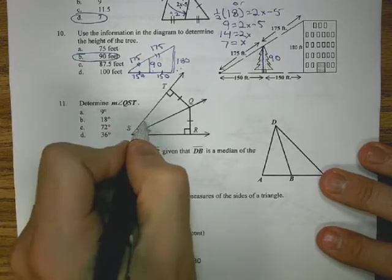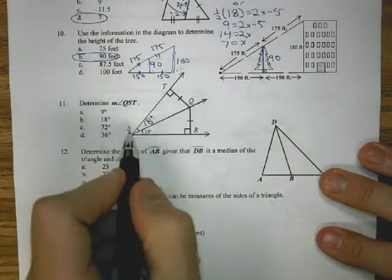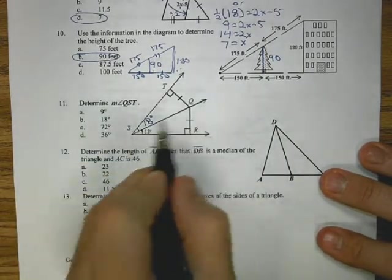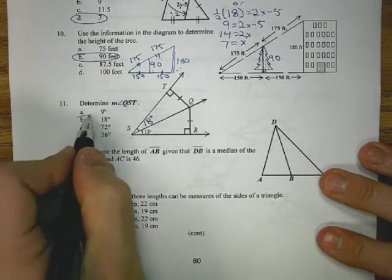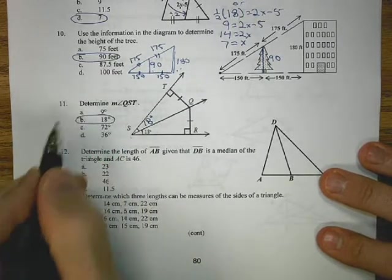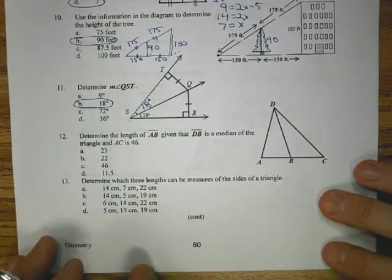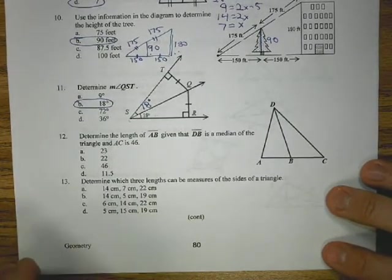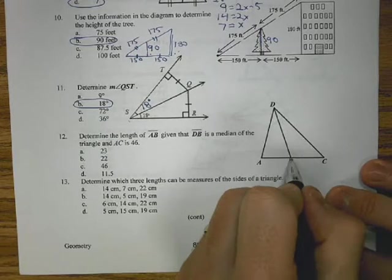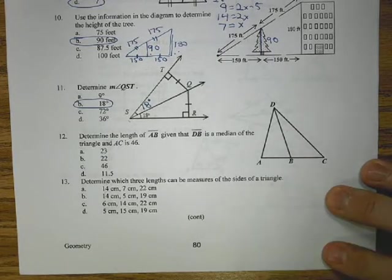Number 11 is an angle bisector problem. This point Q is equidistant to the sides. That means these angles are equal, so this is also 18, or SQ bisects the angle. So QST is 18 degrees.